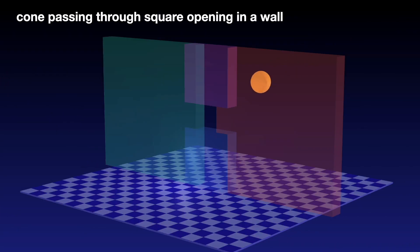And a third example is making a cone pass through a tight opening in a wall, where both translational and rotational control are required to make the cone fit through the opening.